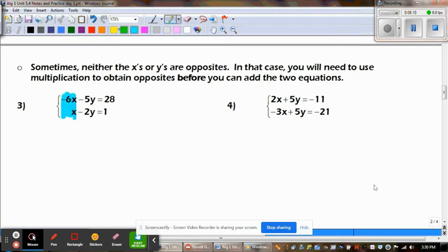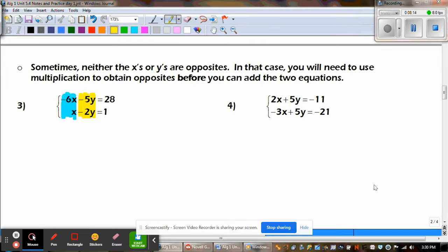You can look at your X's and look at the Y's, which ones look easier to cancel out? Well, I noticed that the X down there, there's only a one on the bottom, so I can multiply everything by six to obtain opposites.